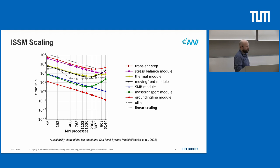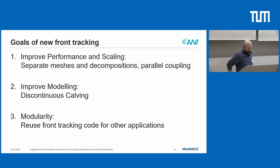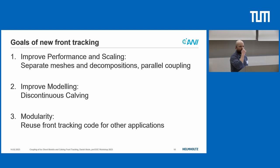Other cores like the mass transport core also don't scale very well, but they are a much smaller part of ISSM so they are less of a problem. Having an external code gives us more flexibility to use different meshes or decompositions and different numbers of MPI processes for the different solvers. The second reason is to improve the modeling — right now ISSM only supports continuous calving rates, but pieces breaking off from the ice is a discontinuous process and sometimes these pieces are very large. The third reason is modularity — we want to use the same front tracking code for other applications as well.